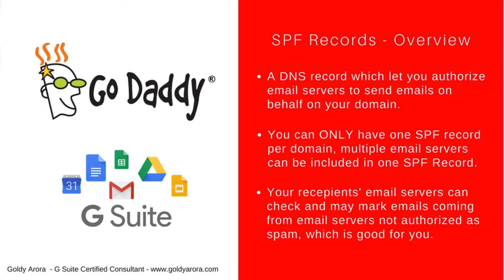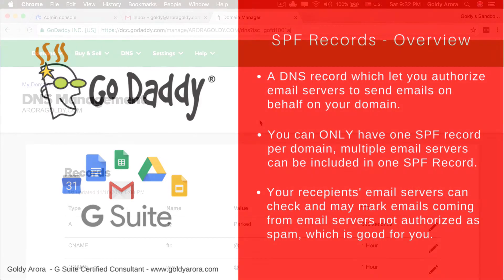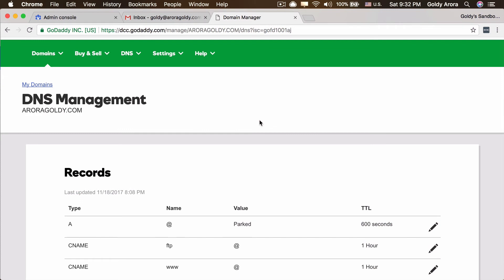This all happens in the background on your recipients' email servers, so your actual recipients — the end users — will not need to do anything. Now let's go ahead and authorize G Suite email servers to send emails on behalf of our domain by creating Google's SPF records in GoDaddy's domain administration panel. For that we need access to two things: first, our domain's DNS at GoDaddy, and second, the value of G Suite's SPF record.